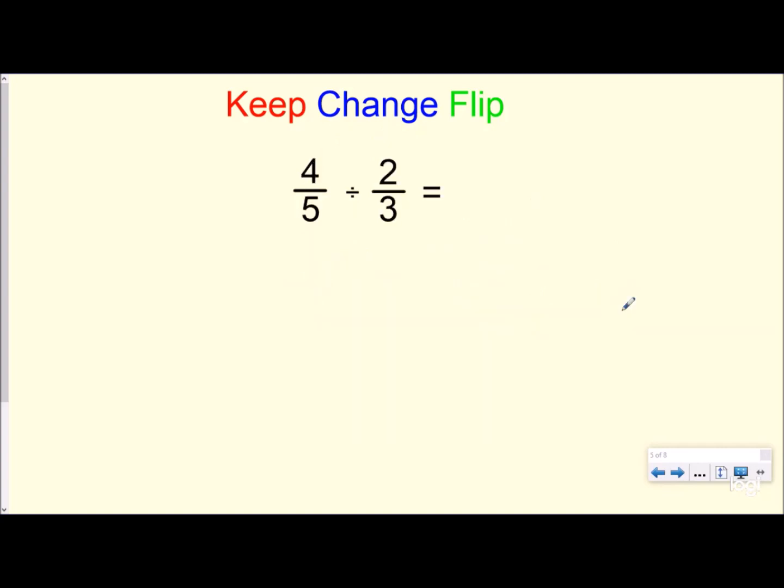And so in this problem, the dividend and the divisor are both fractions. So we don't need to turn anything into a fraction like we did last time. So all we have to do is label above it, keep, change, flip. Same exact thing. You always keep the first fraction exactly the same. And you can write it down underneath. So I'm going to put 4/5 here. And I'm going to change the division sign to a multiplication. And again, I'm going to flip 2/3 on top of itself, otherwise known as reciprocal. And I'm going to have 3/2 now.